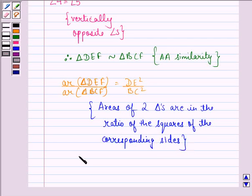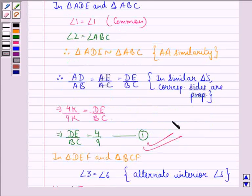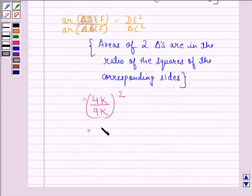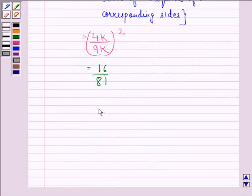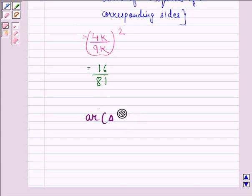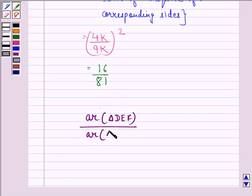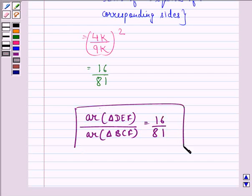So this will be equal to 4K upon 9K the whole square. This we get by this equation and this is equal to 16 by 81. So our answer to this question is that ratio of areas of triangle DEF and triangle BCF is 16 upon 81. So this is what we have to find in this question.